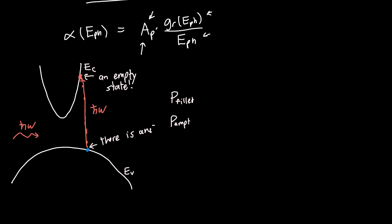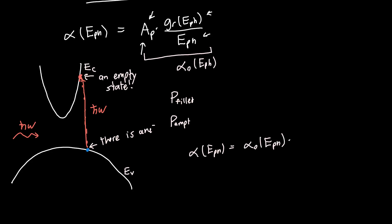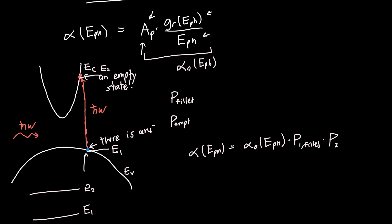So we need to multiply our initial absorption spectra — I'm going to call this A0 as a function of our photon energy — by some probability. Our actual absorption coefficient is just going to be this A0 term multiplied by the probability that there is an electron at state 1, and we need state 2 to be empty. So we need the probability that state 1 is filled, and the probability that state 2 is empty.